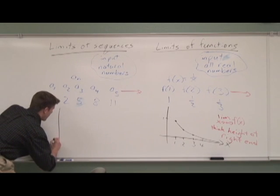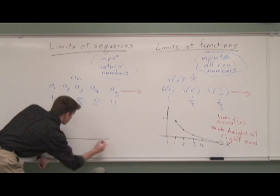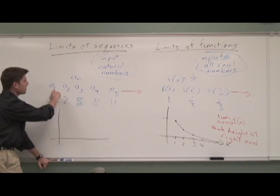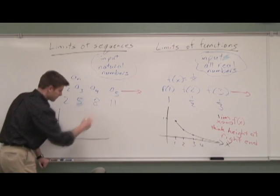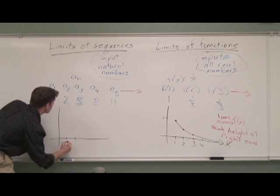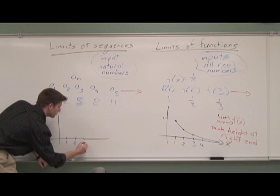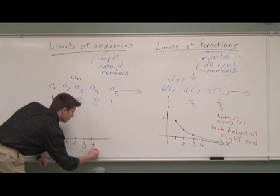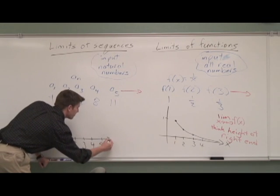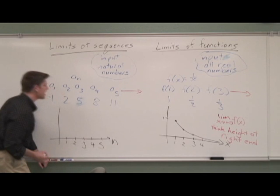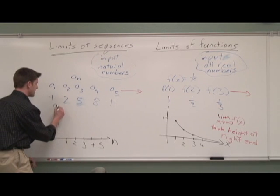If you graphed something like this, you'd still have your inputs, which are usually represented as subscripts here. So we've got 1, 2, 3, 4, 5. So those are n values here. And this is a of n.